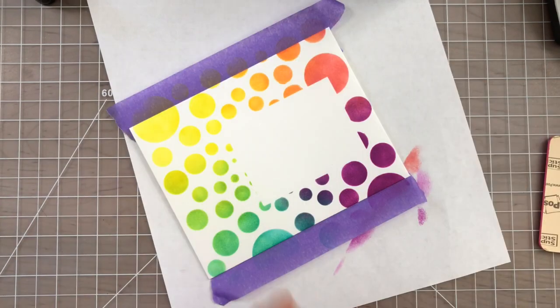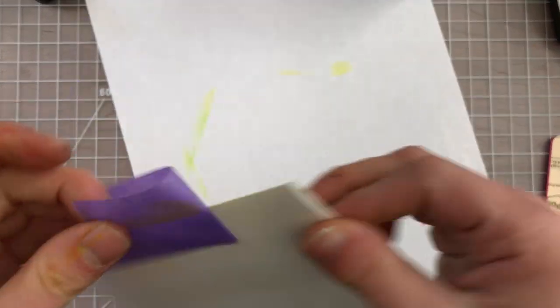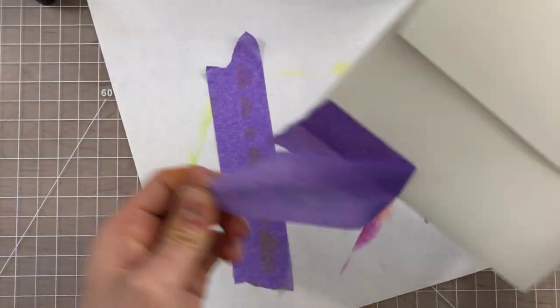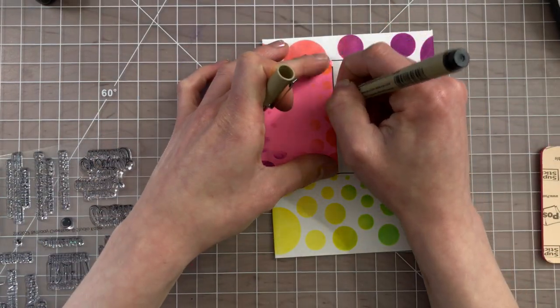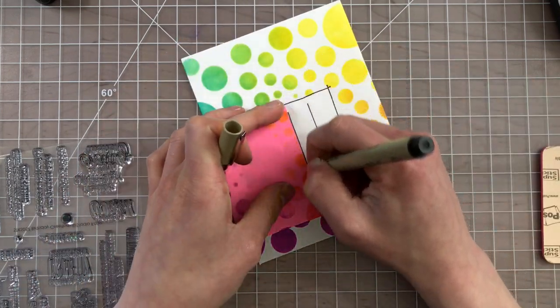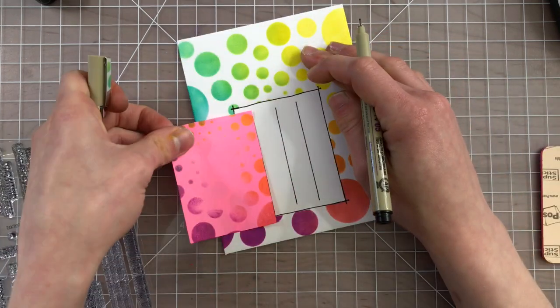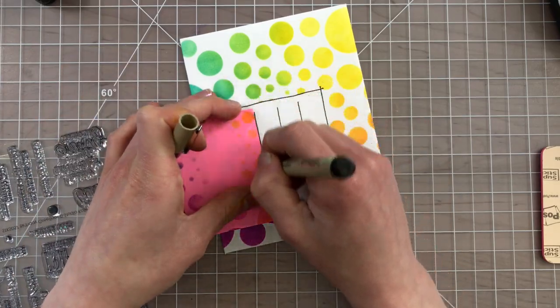So once the stenciling was done I took the stencil off and I'm going to remove the mask and you can see we have this nice bright white area now where we can add the recipient's address to the front side of the envelope. I also used a black pen and added a little frame around the negative area and that post-it note I'm using to make some straight lines for the address.